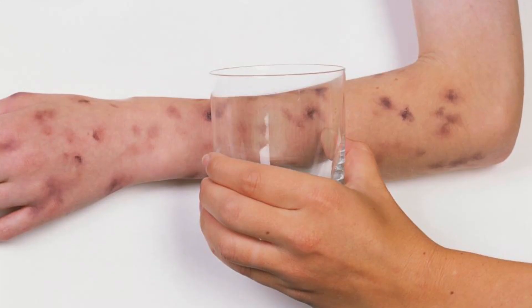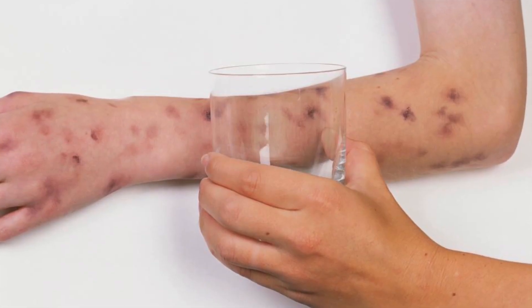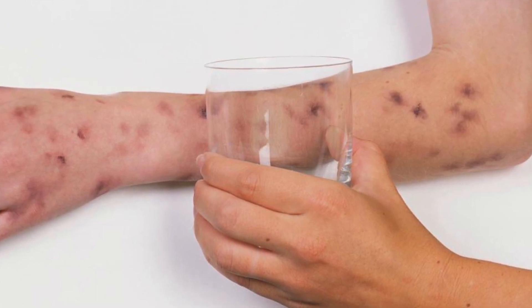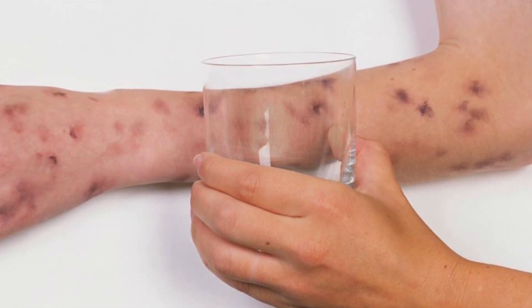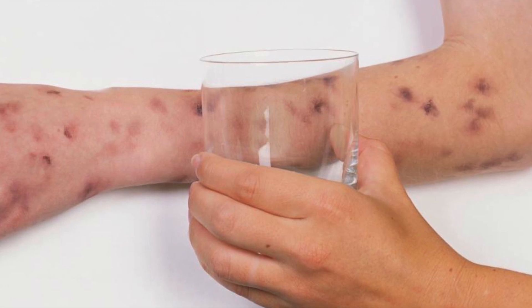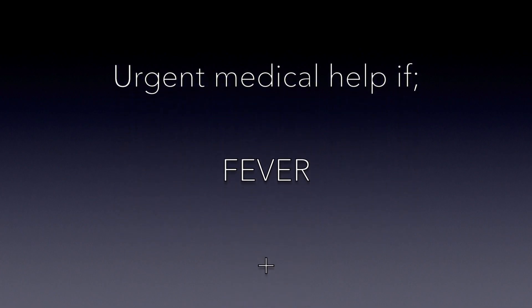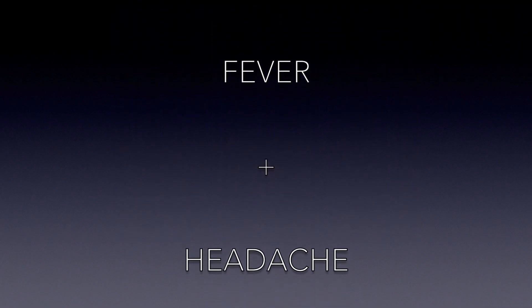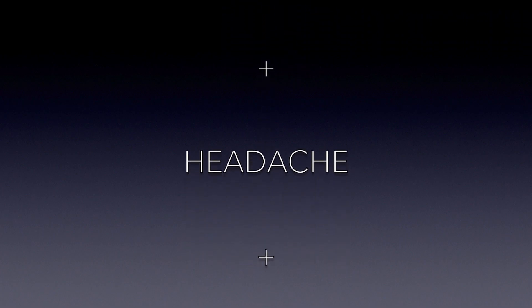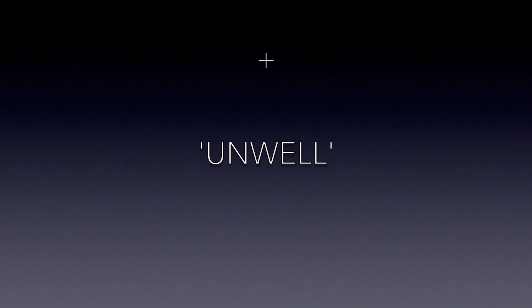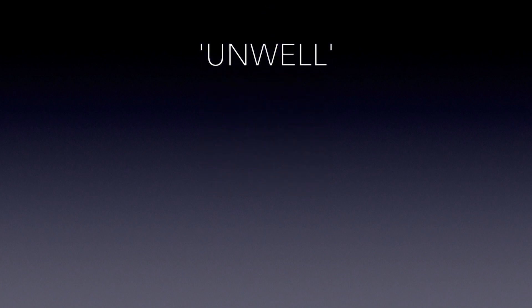The characteristic rash associated with meningitis is not always present, but this rash classically does not fade when a glass is rolled over it. It is imperative to seek urgent medical help if you are worried about any of these symptoms. Often the classical rash may not appear.